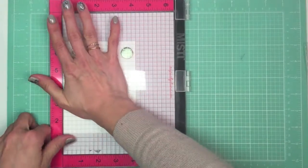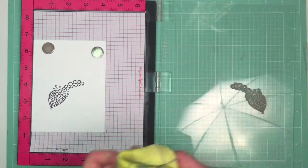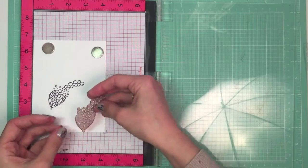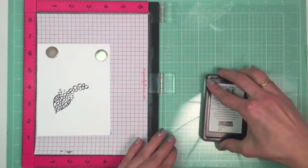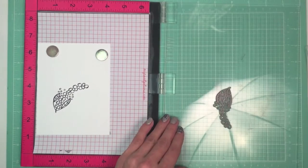I'm starting with deciding where I want my image to be, and I'm placing the stamp on the paper and then securing it on the MISTI door by closing it.